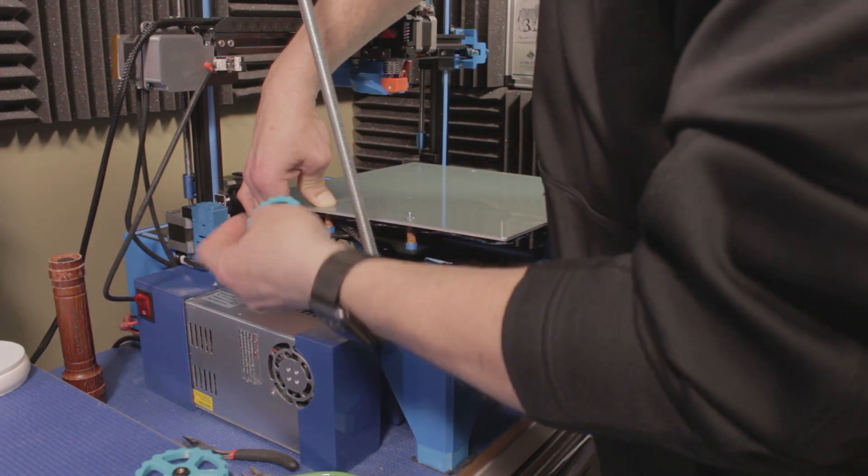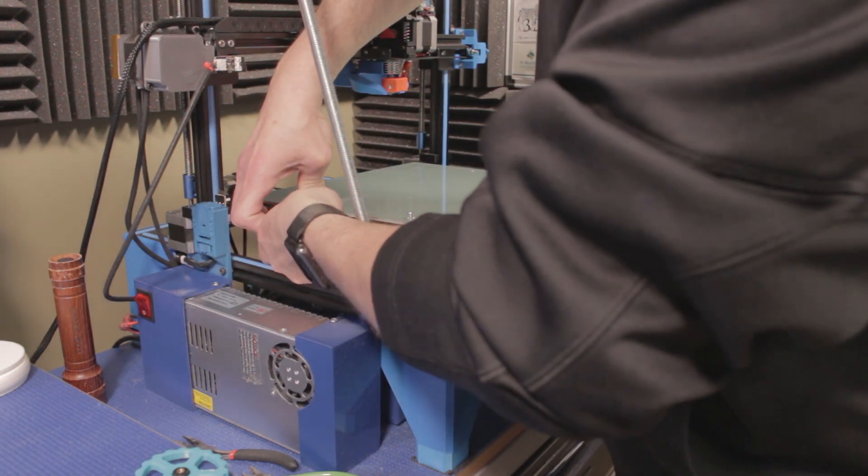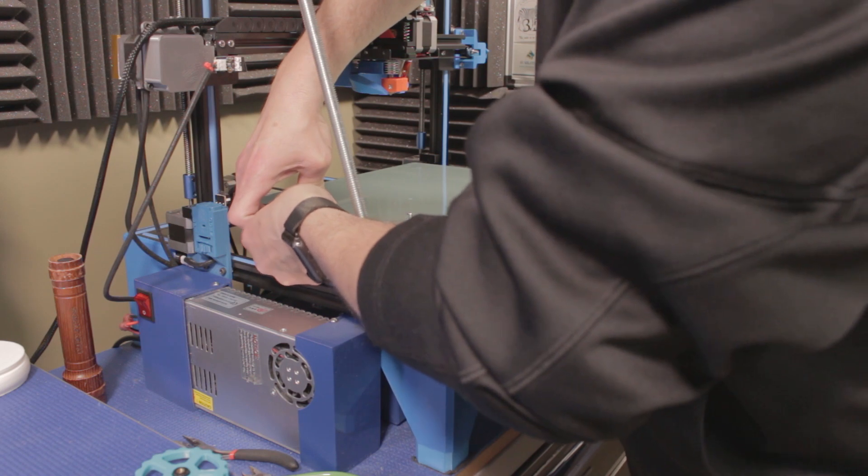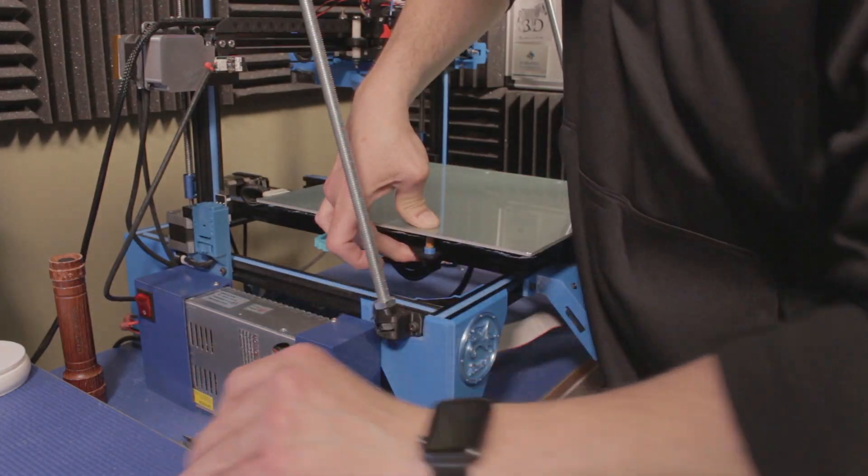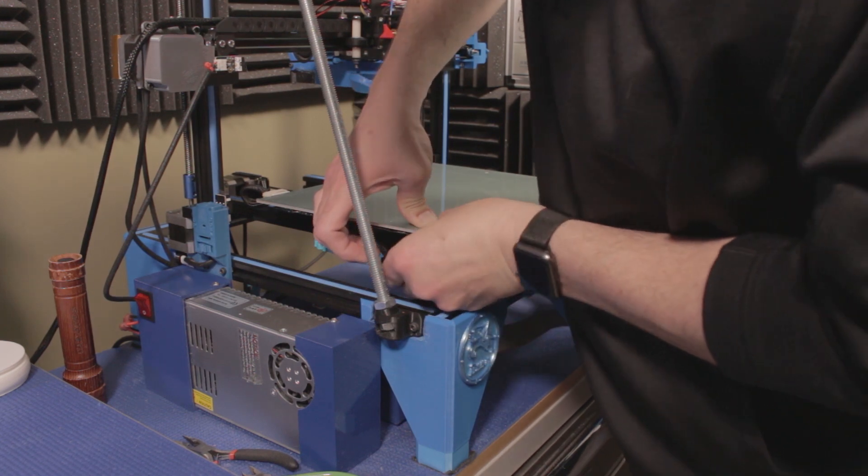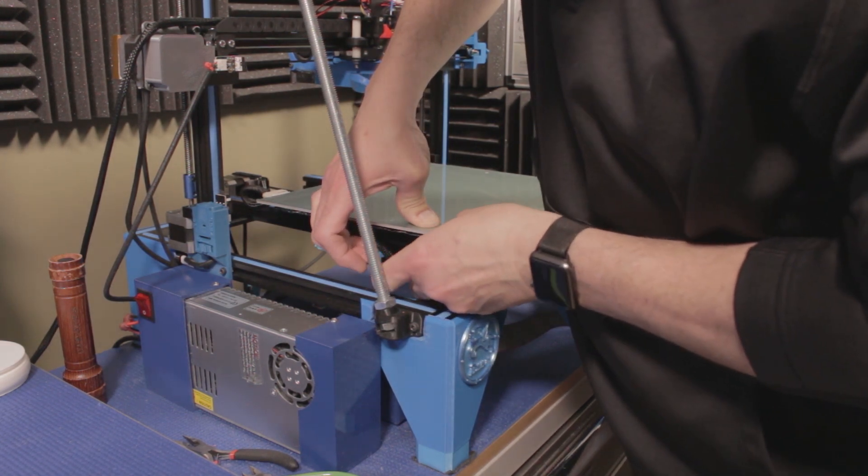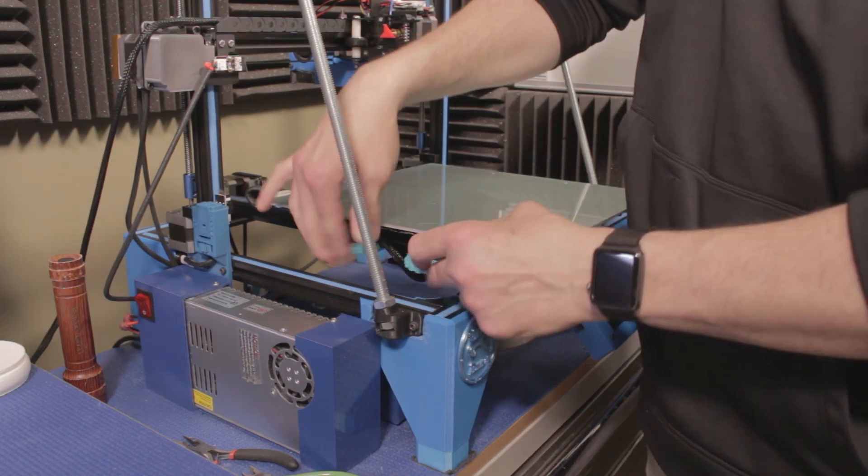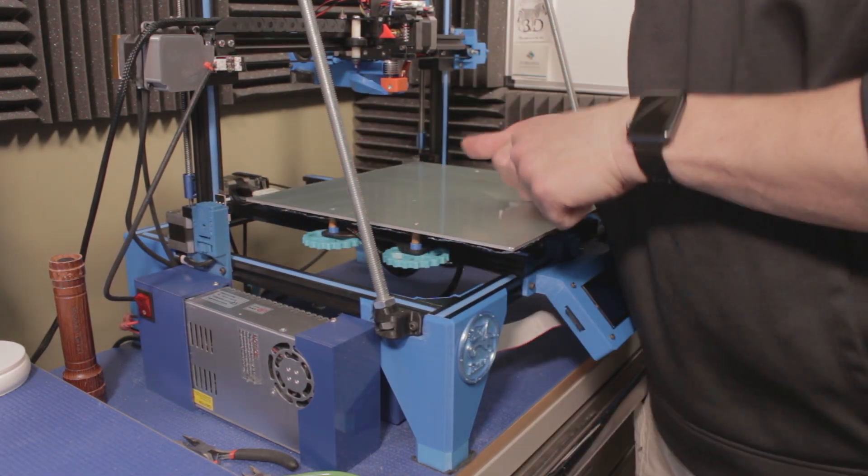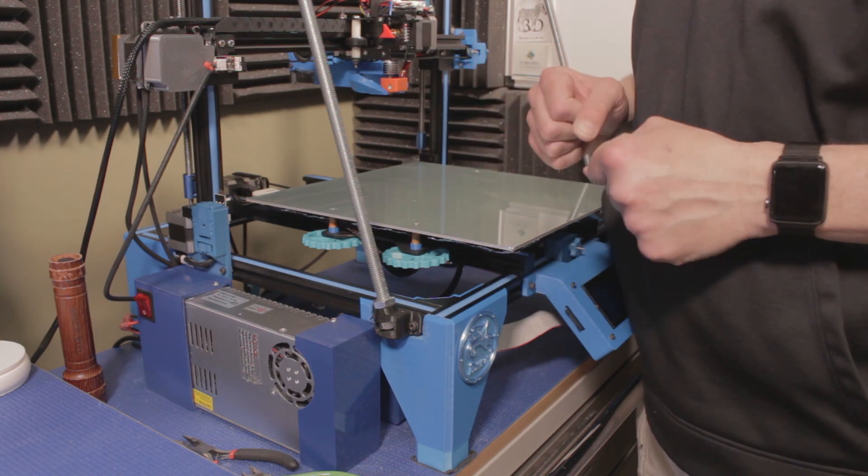So now that the spacers on that one we can put the spacer on this one, kind of find the hole here, push it down, put the knob on. I'll do the same thing on the other side and then we'll try it out.